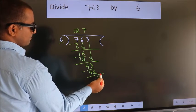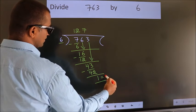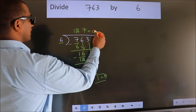No more numbers to bring down. So we stop here. This is our remainder. This is our quotient.